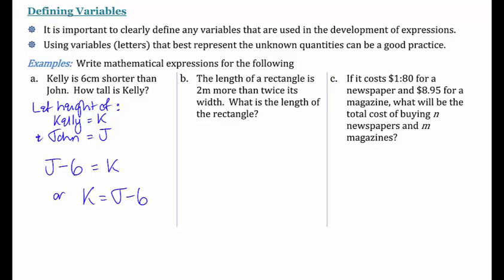The next one, the length of a rectangle is two meters more than twice its width. So again, we have to define our variable. So length equals L or capital L and width equals little w. It's up to you what you want to use.